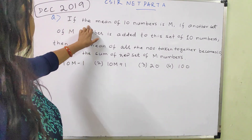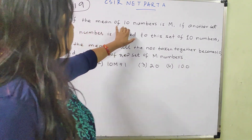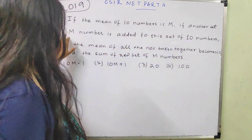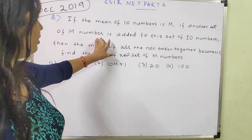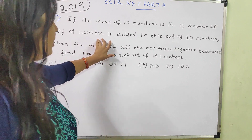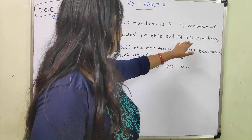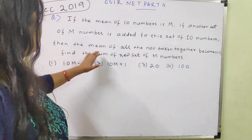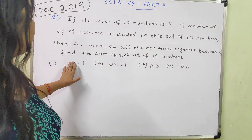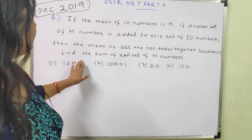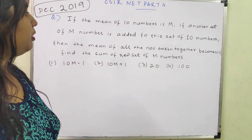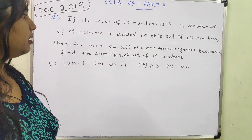The question is an average-based question on Mean. If the mean of 10 numbers is M, and another set of M numbers is added to this set of 10 numbers, then the mean of all the numbers taken together becomes 10. Find the sum of the new set of M numbers.